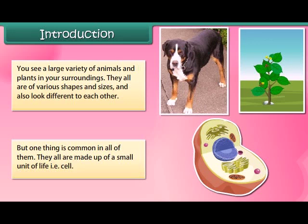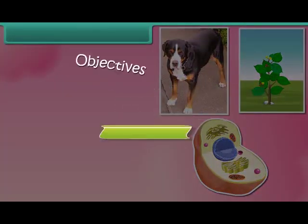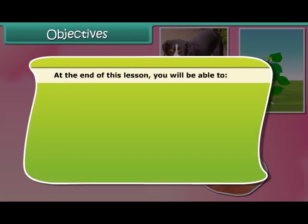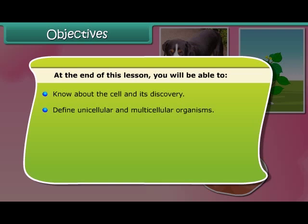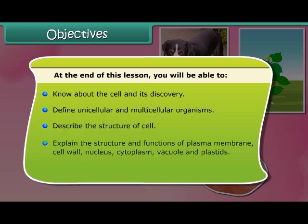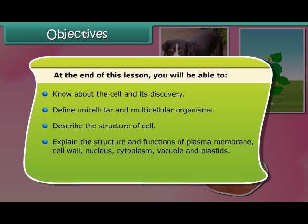In this module we are going to learn about the cell and its structure. At the end of this lesson you will be able to know about the cell and its discovery, define unicellular and multicellular organisms, describe the structure of the cell, explain the structure and functions of cell membrane, cell wall, cytoplasm, nucleus, vacuole, and plastids, and differentiate between the plant and animal cell.